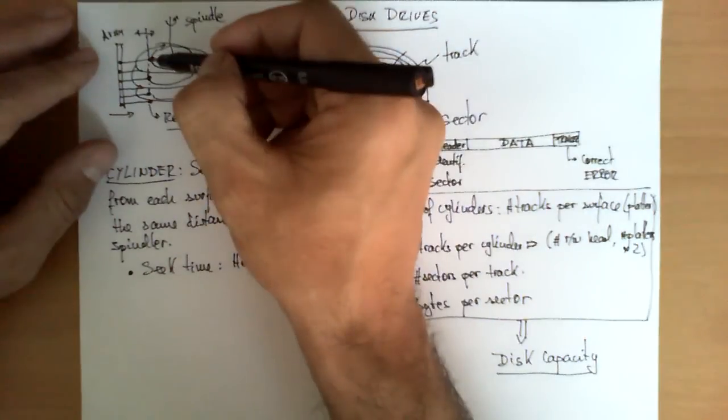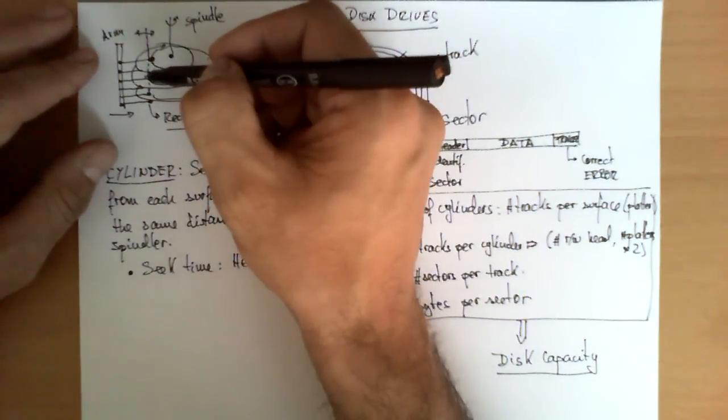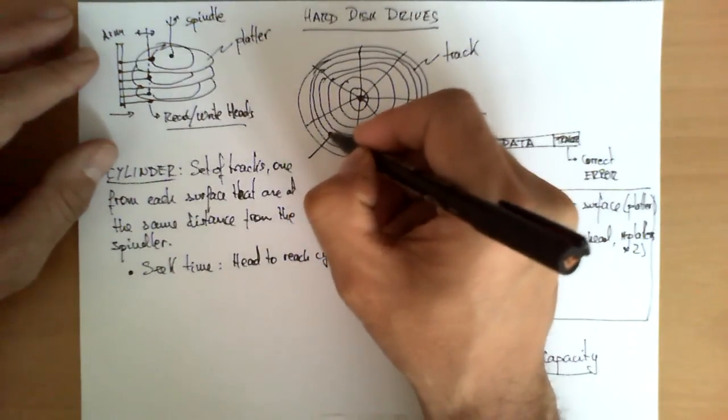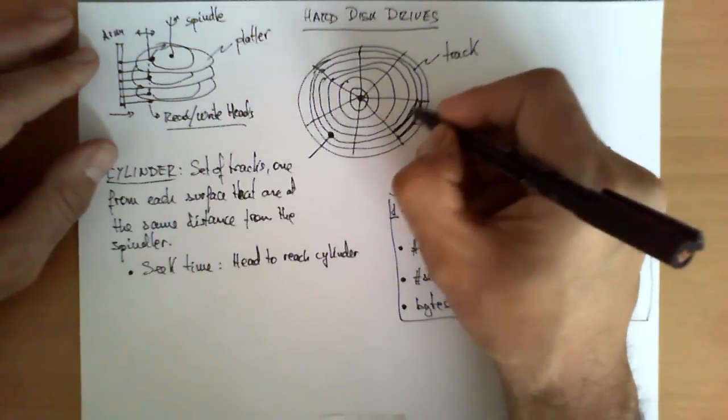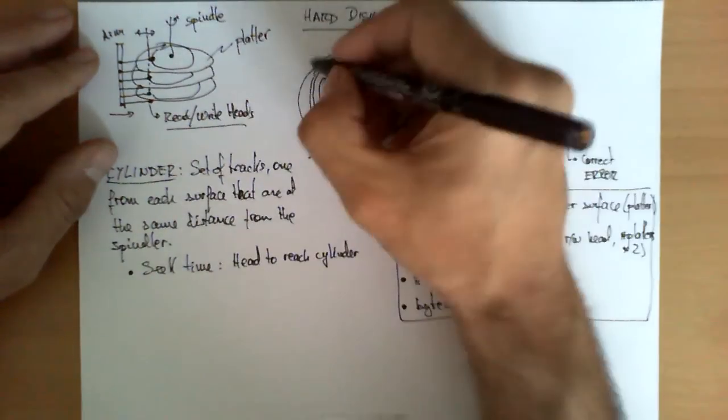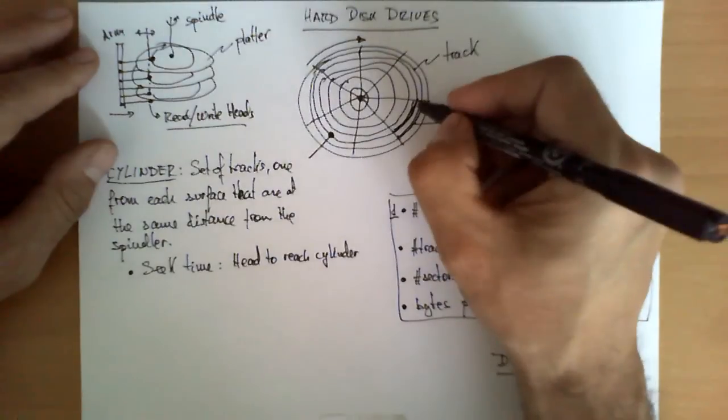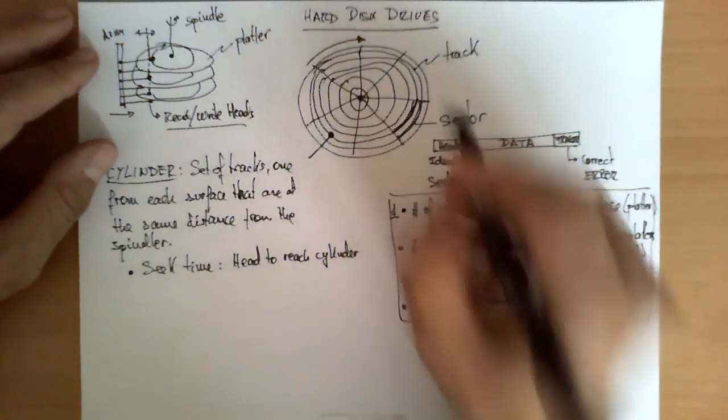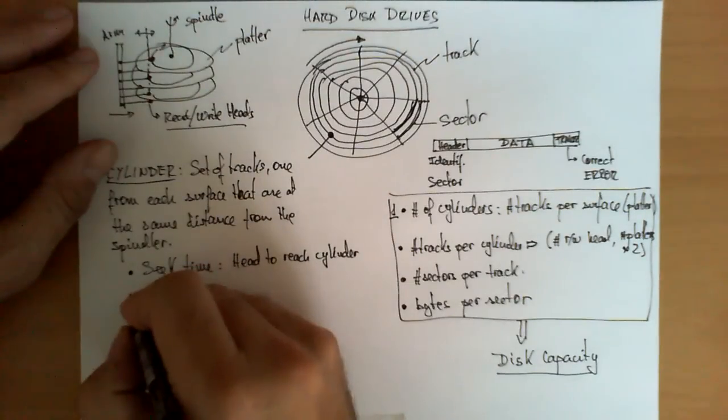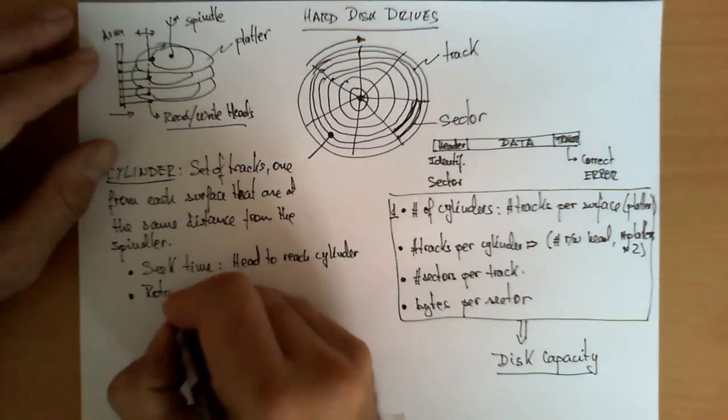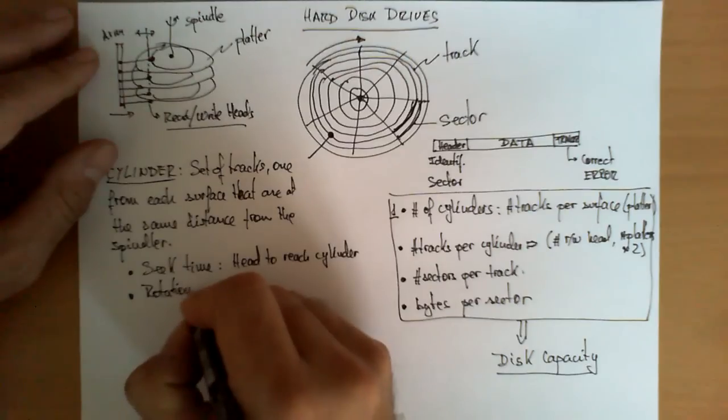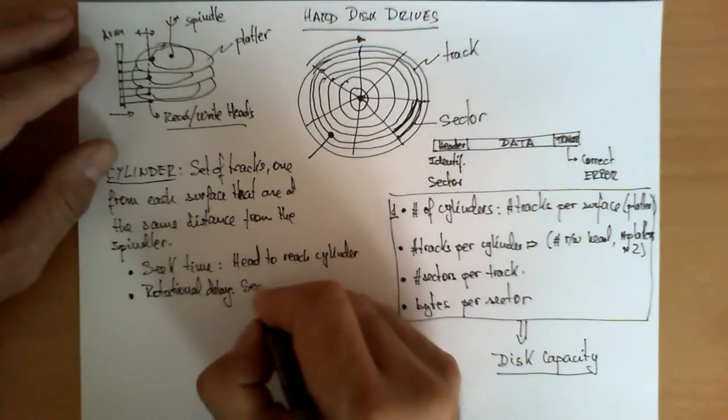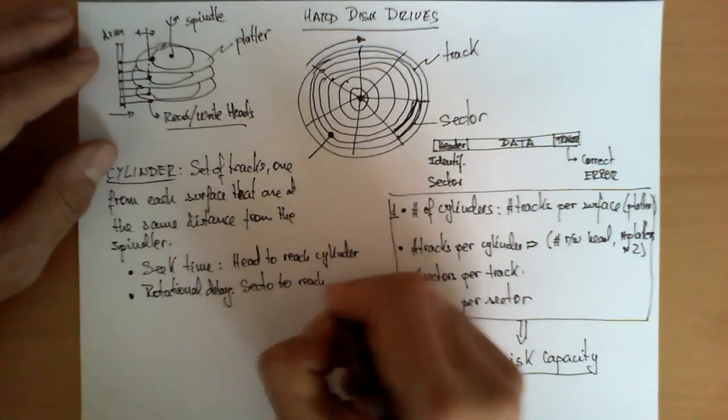Once the read-write heads are positioned in the right cylinder, what we have to do, let's assume that the head is already positioned here, and we are trying to read this sector over here. What we have to do is, if this disk is spinning in this direction, is wait until this sector passes right underneath this head and this information can be read. This delay is what is called rotational delay. And it's exactly the time that takes a sector to reach the head.